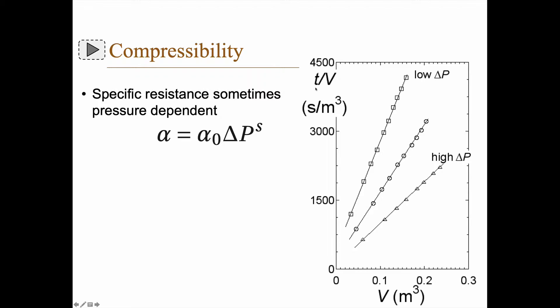If you plot t divided by V against V for different pressures, you might get something like this. So at low pressure you get this line here, and at high pressure you get this line down here.